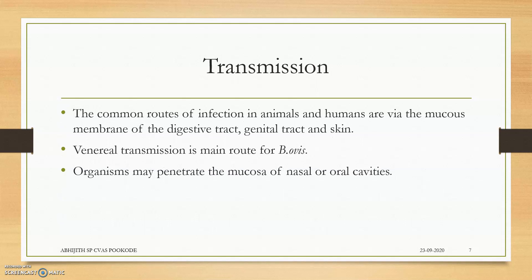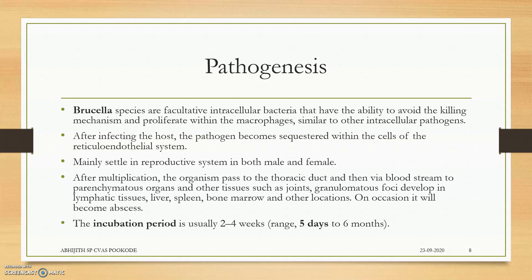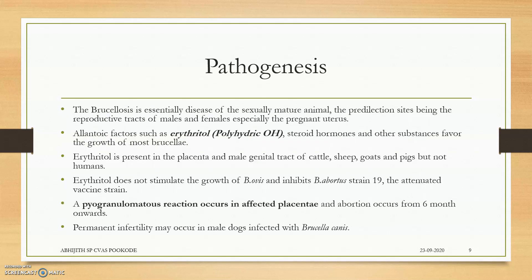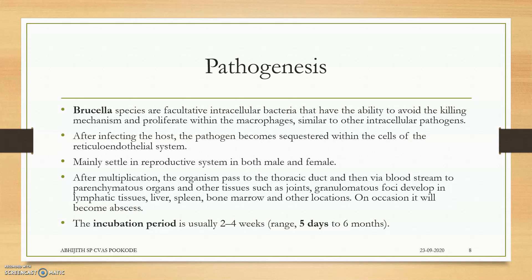Transmission occurs through the venereal route, mucous membrane penetration, genital tract, skin, and mucous membranes of the nasal and oral cavity. Regarding pathogenesis, Brucella species are facultative intracellular bacteria that have the ability to avoid killing mechanisms — they fuse with the phagosome, and the phagosome will not lyse the bacteria.